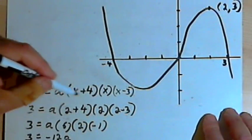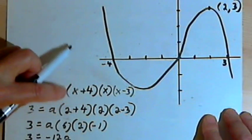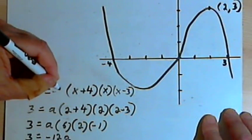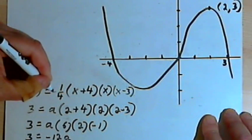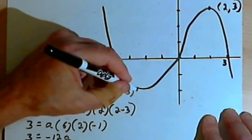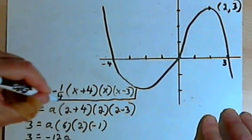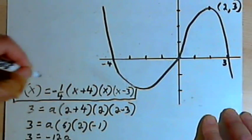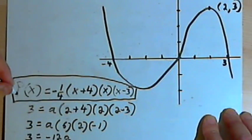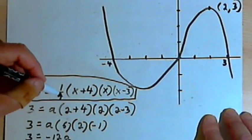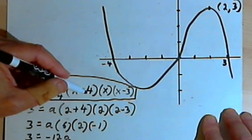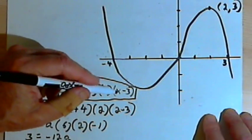So that means the constant that's multiplying these factors is going to be negative one-quarter. So what we've got here is the equation for the polynomial function. p of x equals negative one-quarter times x plus 4 times x times x minus 3.